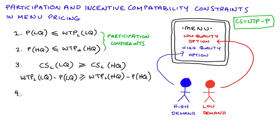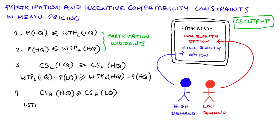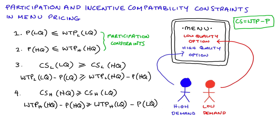We'll have a similar condition for the high demand consumer. We need to make sure that the consumer surplus that consumer gets from the high quality package is greater than or equal to the consumer surplus they get from the low quality package. So the willingness to pay of the high demand consumer for the high quality package minus the price of the high quality package must be greater than or equal to the willingness to pay of the high demand consumer for the low quality package minus the price of the low quality package.